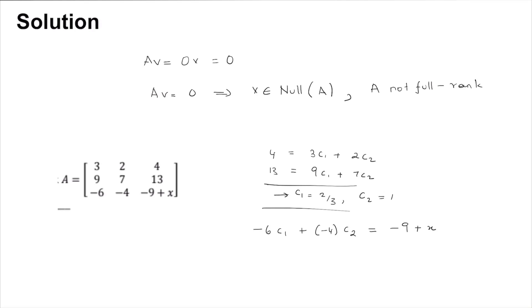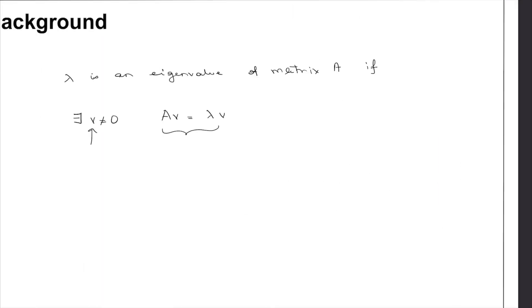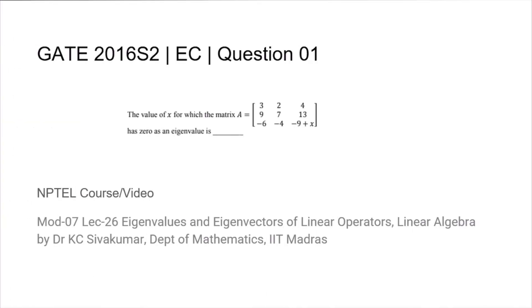And if you solve for this, given that you know the value of c1, you will get that x is equal to 1. That is, for this value of x, the matrix A will have a zero eigenvalue. That is the answer: 1.